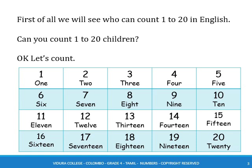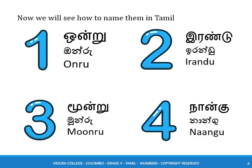1, 2, 3, 4, 5, 6, 7, 8, 9, 10, 11, 12, 13, 14, 15, 16, 17, 18, 19, 20. Now we will see how to name them in Tamil.